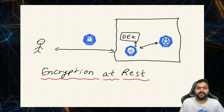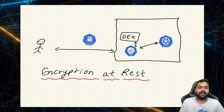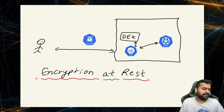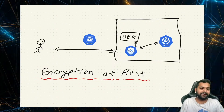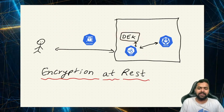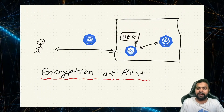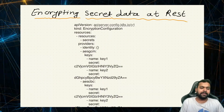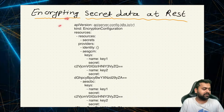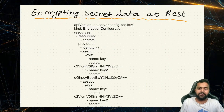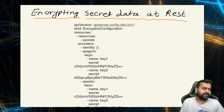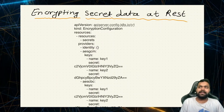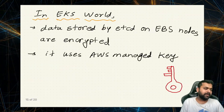If you have done Kubernetes the hard way, you must have seen that we manually create an encryption config and key, and based on that we do the encryption. This terminology is also known as encryption at rest. But now, what if the data encryption key or whichever keys we are using in the encryption config gets compromised? There's still a risk of exploitation. The encryption config looks something like this — it's a kind EncryptionConfig which we pass as a flag to the API server. But again, as I said, what if that key gets exploited or compromised?